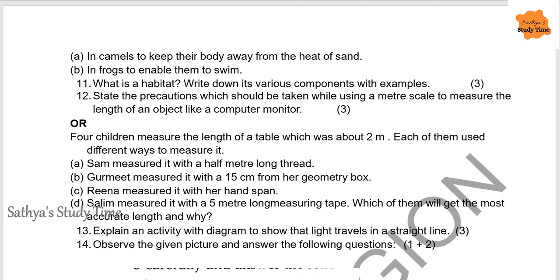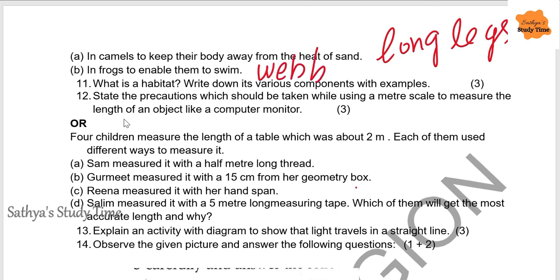Mention one adaptation in the following animals: in camels, to keep their body away from the heat of sand — camels have long legs. In frogs, to enable them to swim — frogs have webbed feet. Next: What is a habitat? Write its components with an example. A habitat is a place where plants or animals live. The components of a habitat are shelter, water, food, space, and air.